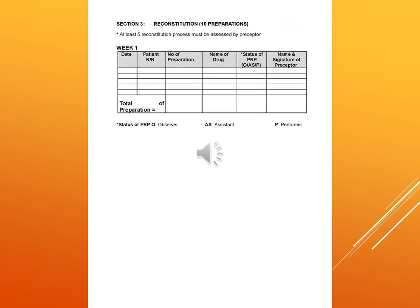Section 3 includes reconstitution of at least a minimum number of preparations. This is recorded in a chart with date, patient RN, number of preparations, name of drug, status of PRP, name and signature of preceptor, and total number of preparations. The same chart format is followed in week 2.